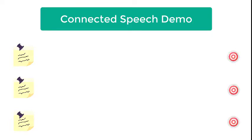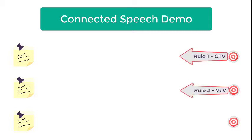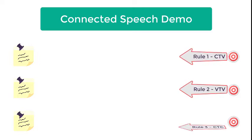Before we start, please remember, the three rules of connected speech are: consonant to vowel, vowel to vowel, and consonant to consonant.